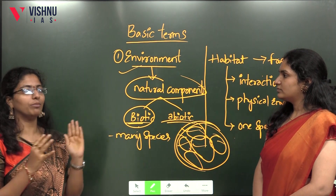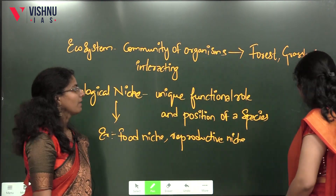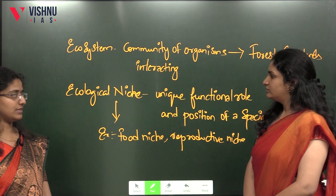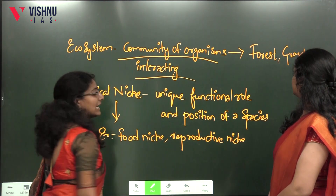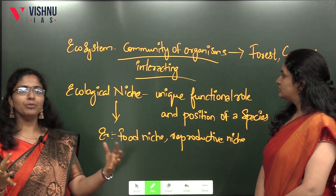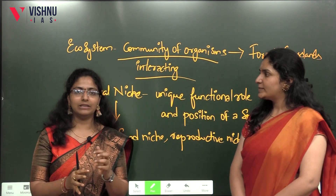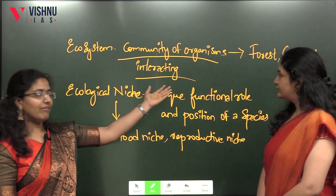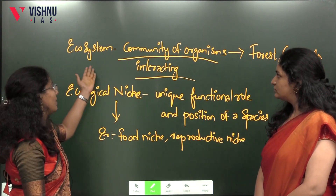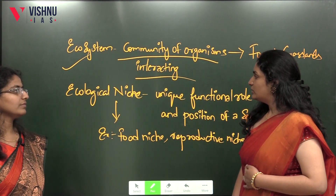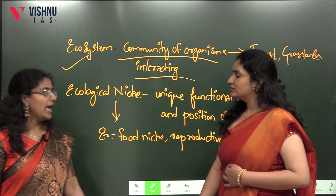Ecosystem is a community of different organisms living in a space and interacting with each other. A forest and a grassland are examples of ecosystems.